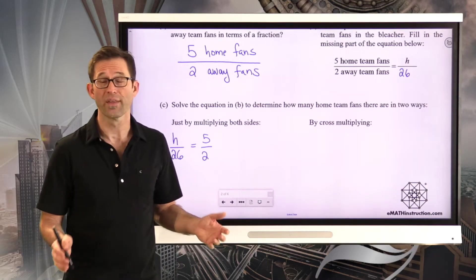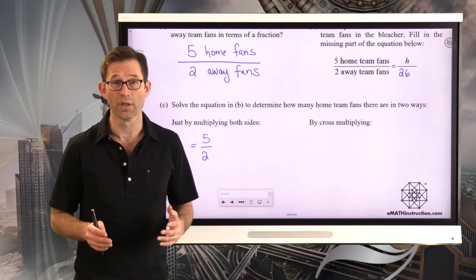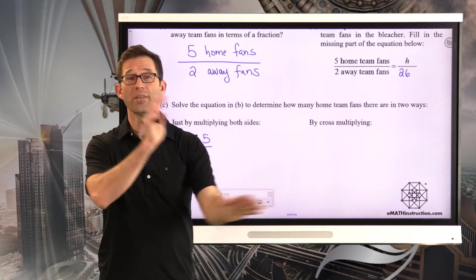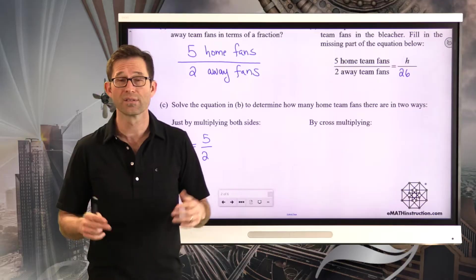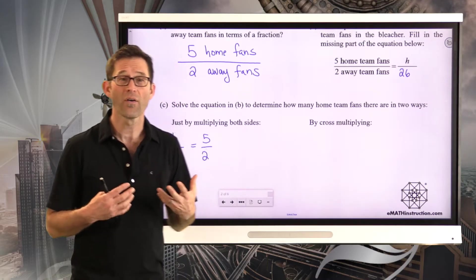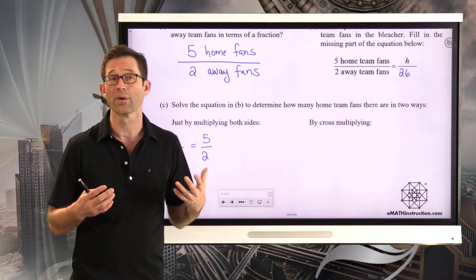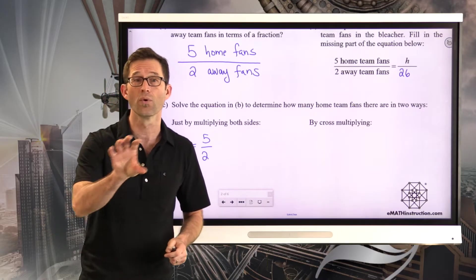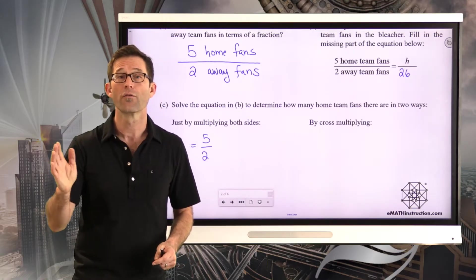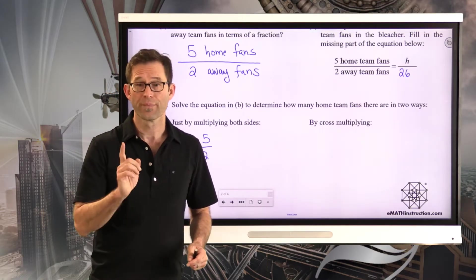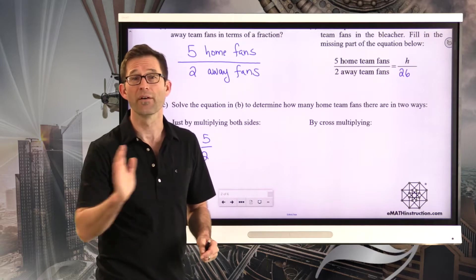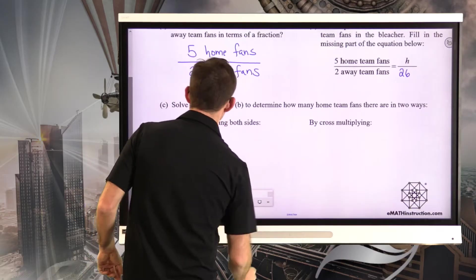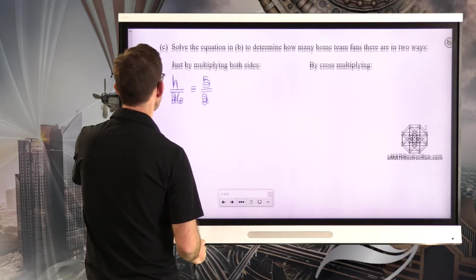Letter C. Solve the equation in B to determine how many home team fans there are in two different ways, just by multiplying both sides and by cross-multiplying. So let's do it. Now one thing I'm going to do right away is I'm going to rewrite this equation as H divided by 26 is equal to 5 divided by 2. That's called the symmetric property of equality.